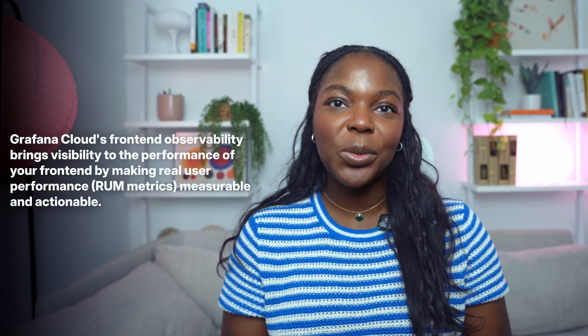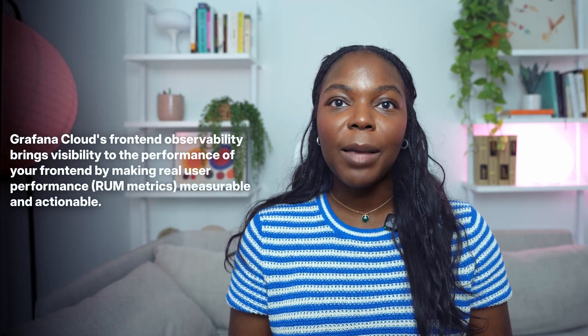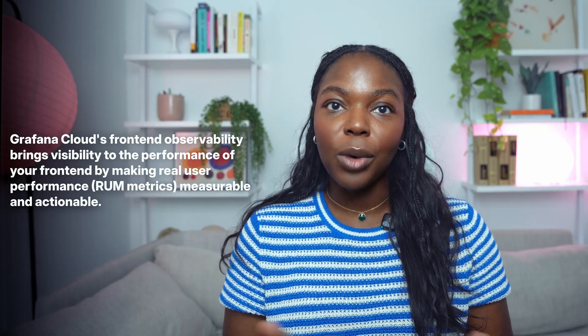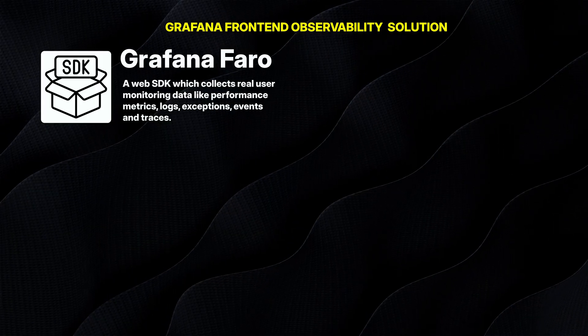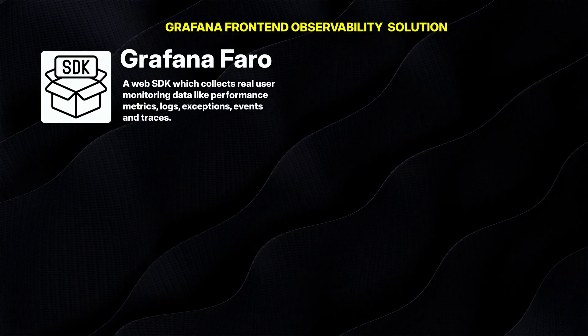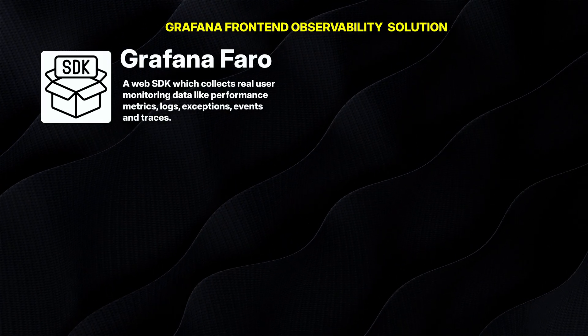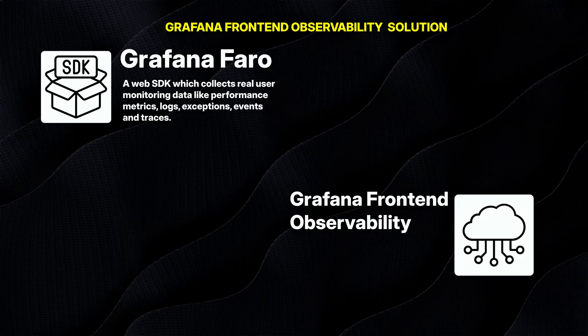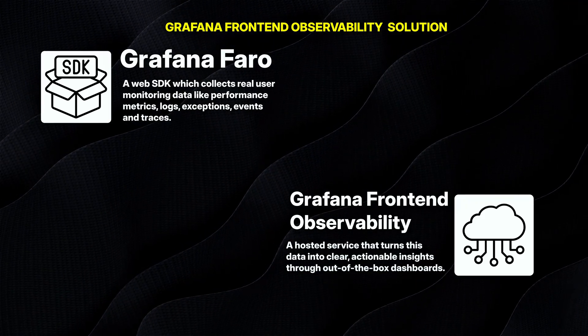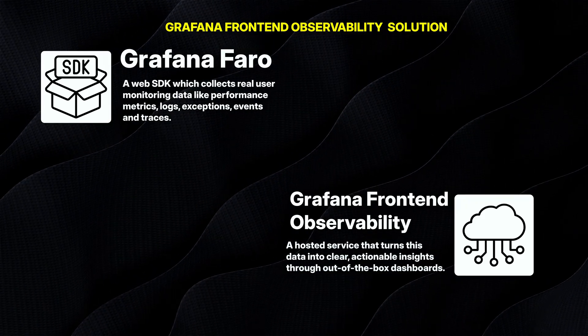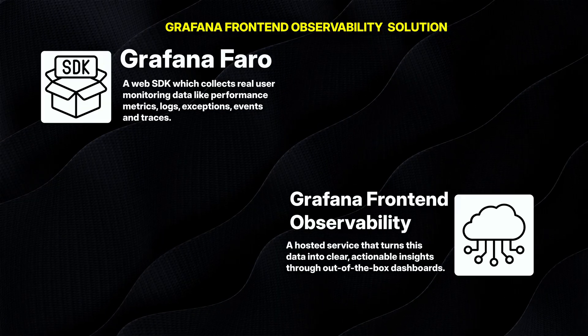Grafana Cloud's front-end observability brings visibility to the performance of your front-end applications by making real user performance metrics measurable and actionable. This solution is made up of two parts: Grafana Faro, a Web SDK which collects real user monitoring data like performance metrics, logs, exceptions, events, and traces; and Grafana Cloud front-end observability, a hosted service that turns this data into clear, actionable insights through out-of-the-box dashboards.